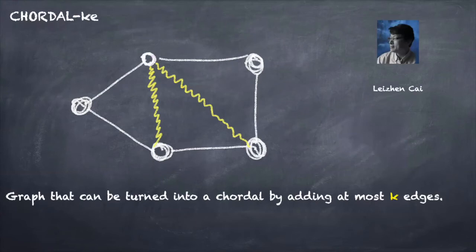Leizhen Cai initiated the systematic algorithmic study of graphs that are close to graph classes with nice properties. He also introduced very convenient terminology which I will use here. In Cai's notation we are interested in chordal minus kE graphs. That is, graphs that can be obtained from a chordal graph by deleting at most k edges.